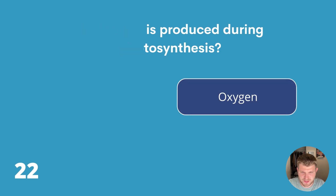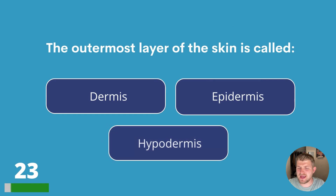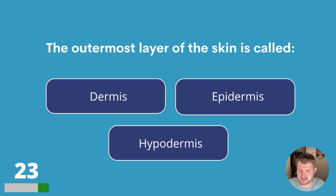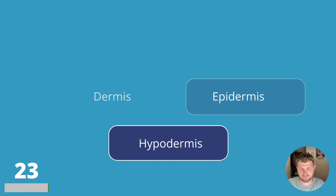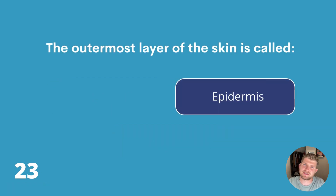Question twenty-three. The outermost layer of the skin is called dermis, epidermis or hypodermis? The outermost layer of the skin is called epidermis.